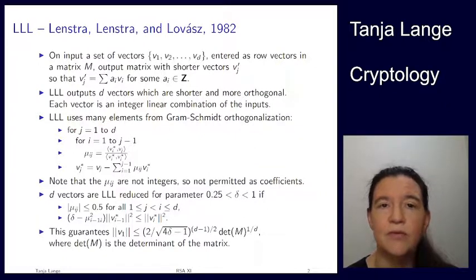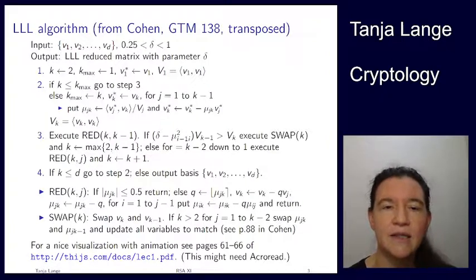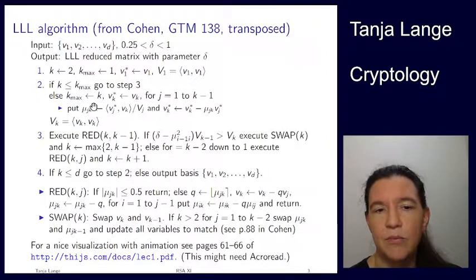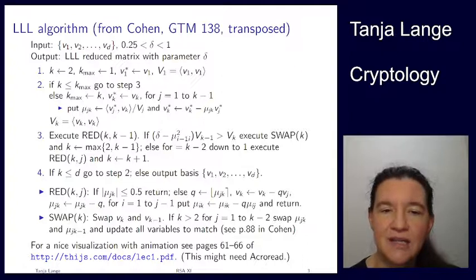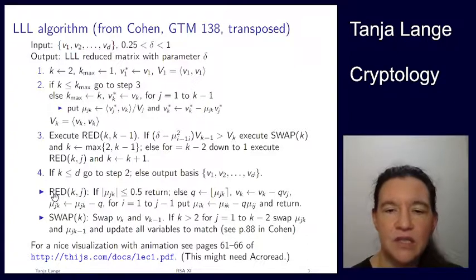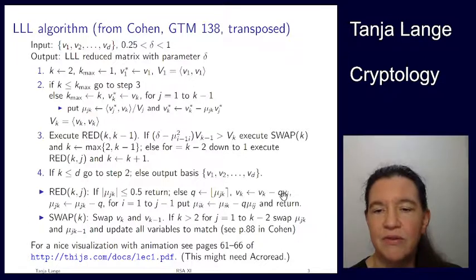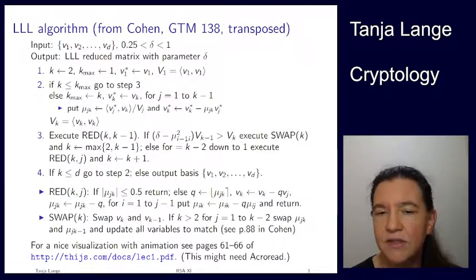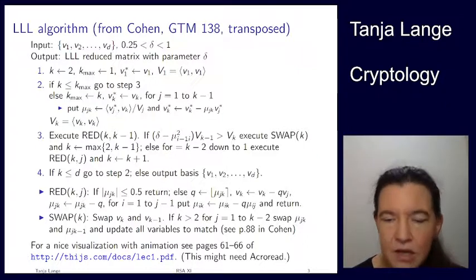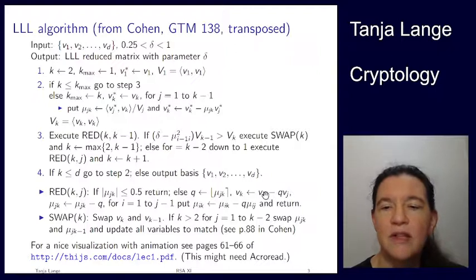I've copied the LLL algorithm — I won't go through it in detail, but here we're computing the mu_jk values and updating them. The reduce routine takes from one vector as many times the previous vector as determined by q, where q is the nearest integer to mu_jk. So if it's 3.8 you take four times; if it's 3.0 you take three times — that's how the vector gets closer.